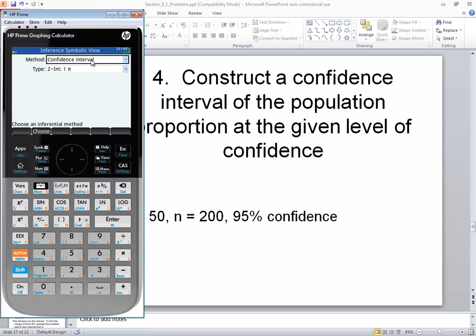And it says method. And mine says confidence interval. But if yours didn't, if you did a down arrow, you see there's hypothesis test and confidence interval. So if you got hypothesis test chosen, then if you do your down arrow, if you do your enter, then do your down arrow, then you can press enter, and that'll select confidence interval.